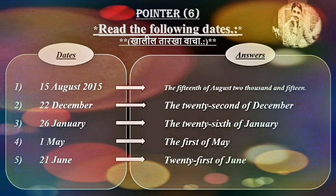Pointer six. Read the following dates. Khalil Tarakha Whach. Dates and answers: 15th August 2015 — the 15th of August, 2015. 22nd — the 22nd. 26th January — the 26th of January. 21st June — the 21st of June.